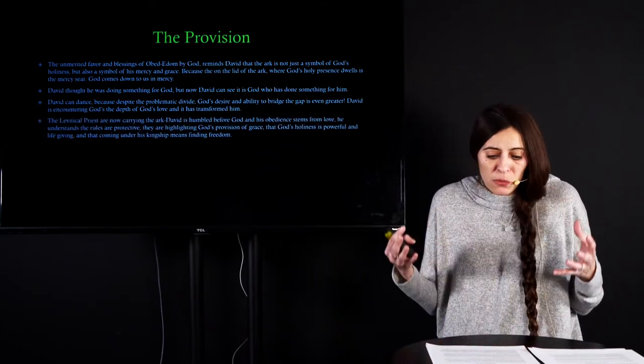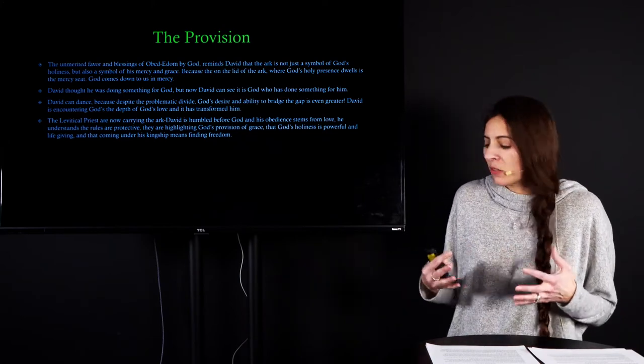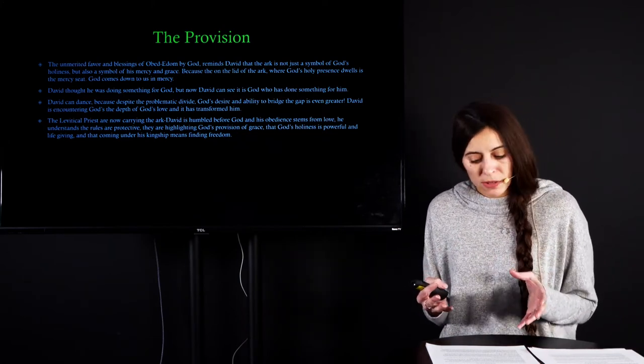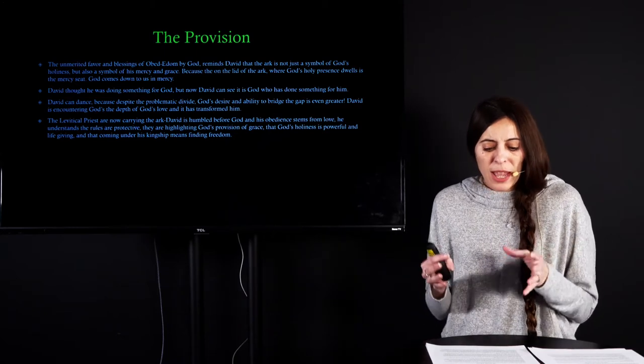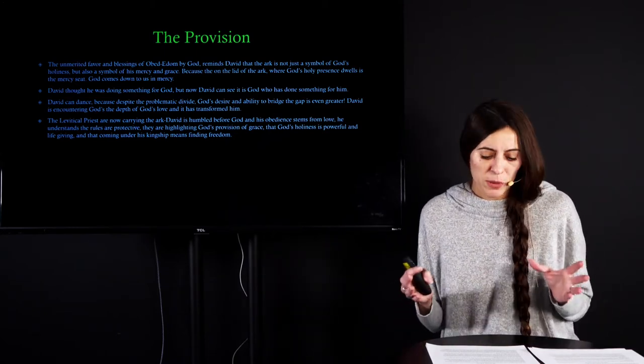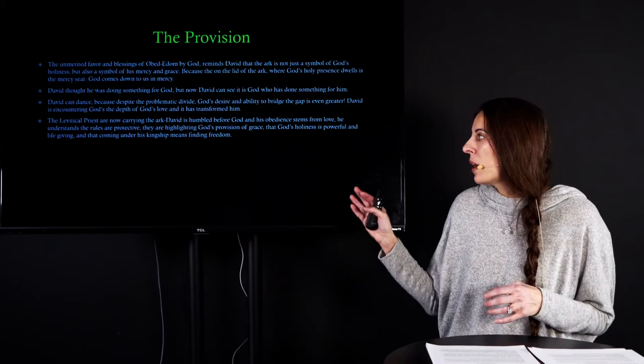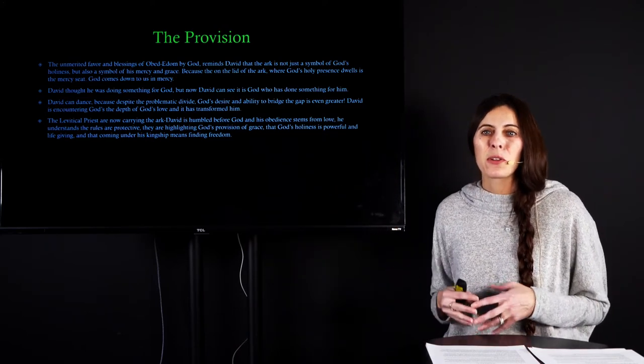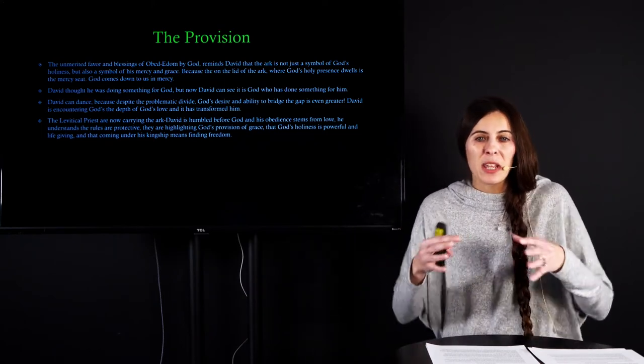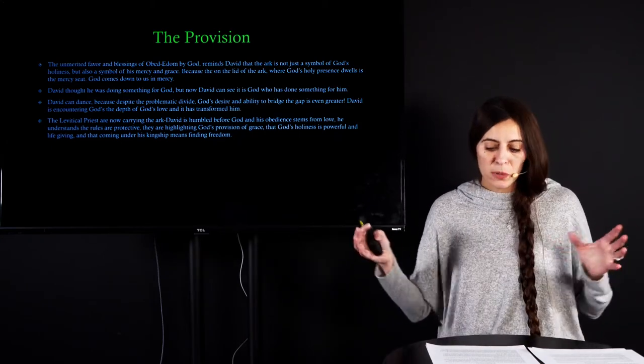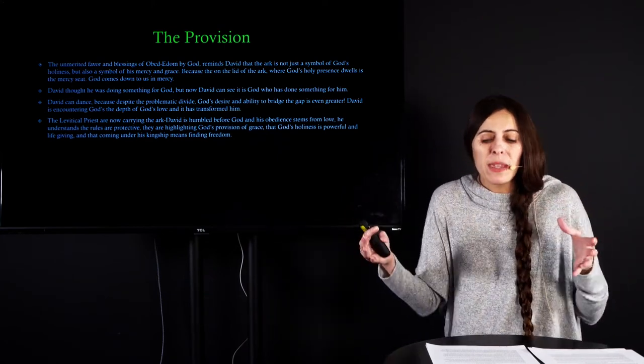Before, David was putting trust in his own abilities, but now David is saying that his trust needs to be in God's ability. And before, David was putting trust in his own goodness, but now he is saying that he can put his trust in God's goodness. And now David is quick to go and get the ark. And what we're seeing here is a new and transformed David, because David now is so humble before the Lord. And now his obedience is actually an act of love, because he sees the rules are protective, and that they are highlighting God's grace, and that his holiness is good, it's powerful, and it's life-giving. There is blessing in Obed-Edom's house, and that coming under his kingship, it means freedom.